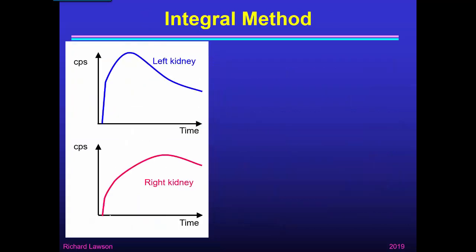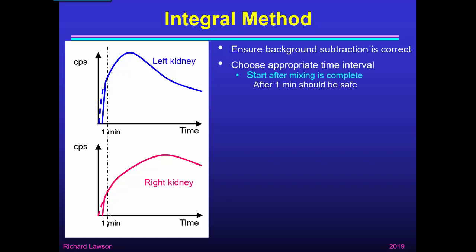If we look at the integral method to calculate relative function, first we have to ensure that background subtraction is correct — the extrapolated curve must start from zero. Here I've included dashed lines with the eyeball extrapolation to demonstrate that these curves are correctly subtracted. We have to choose an appropriate time interval. We start after mixing is complete: if we can identify a kink in the curve we could ignore everything before that kink; if not, one minute should be safe. Everything before one minute must include the time when mixing is not complete.